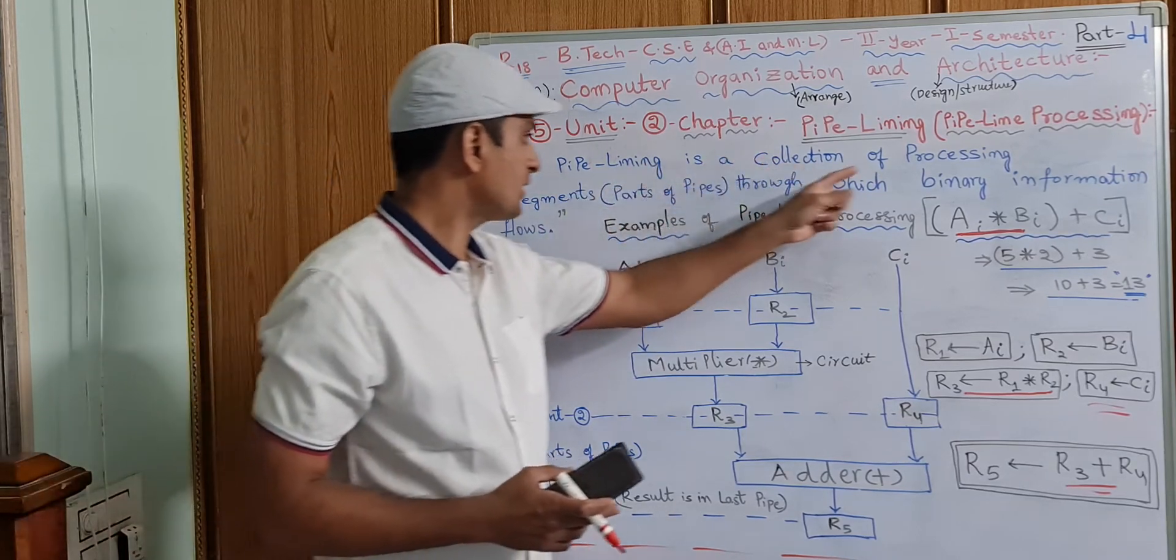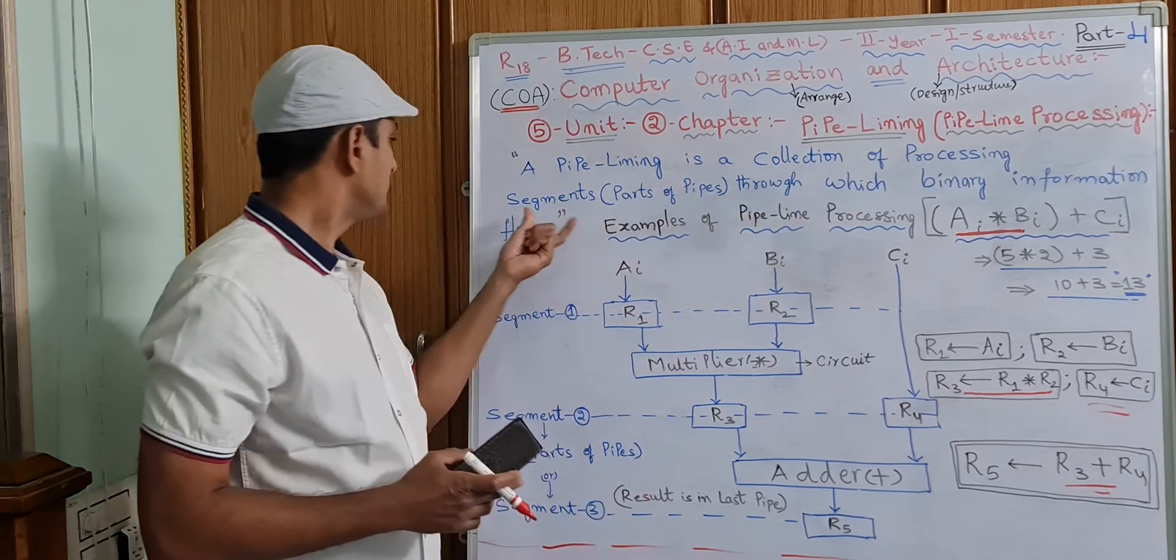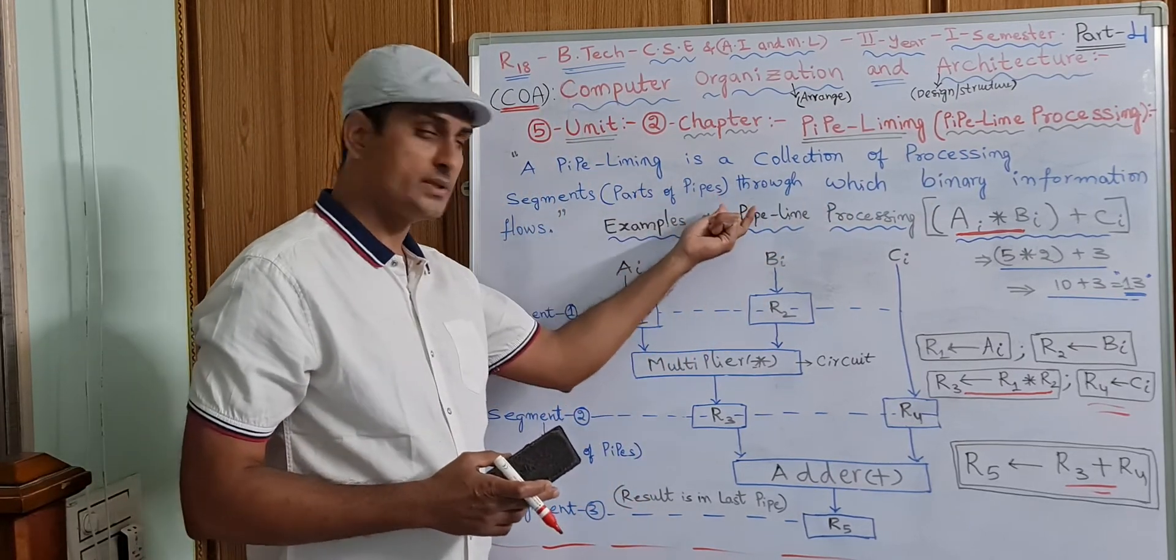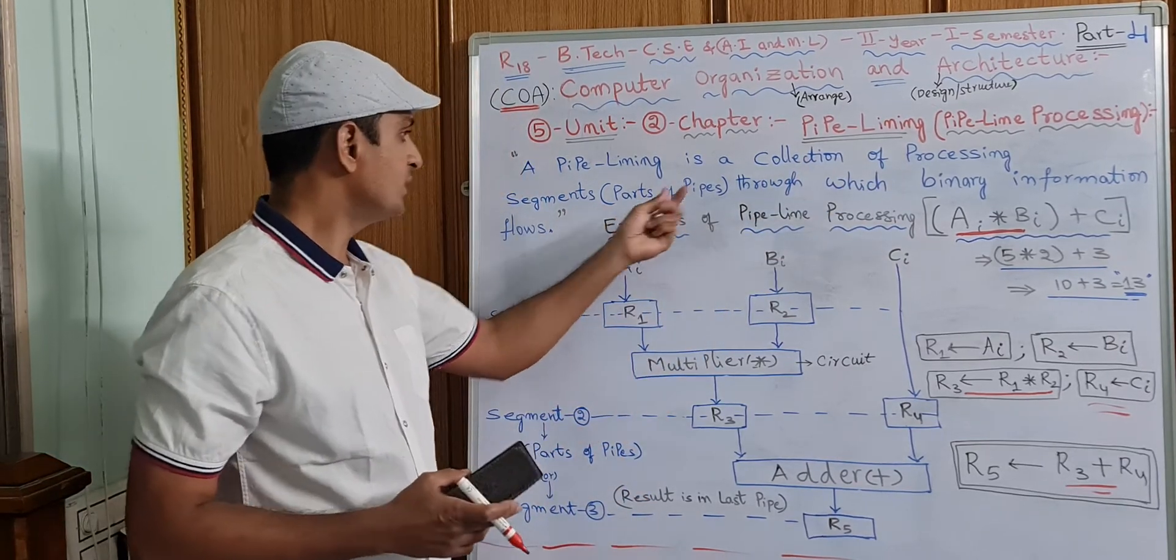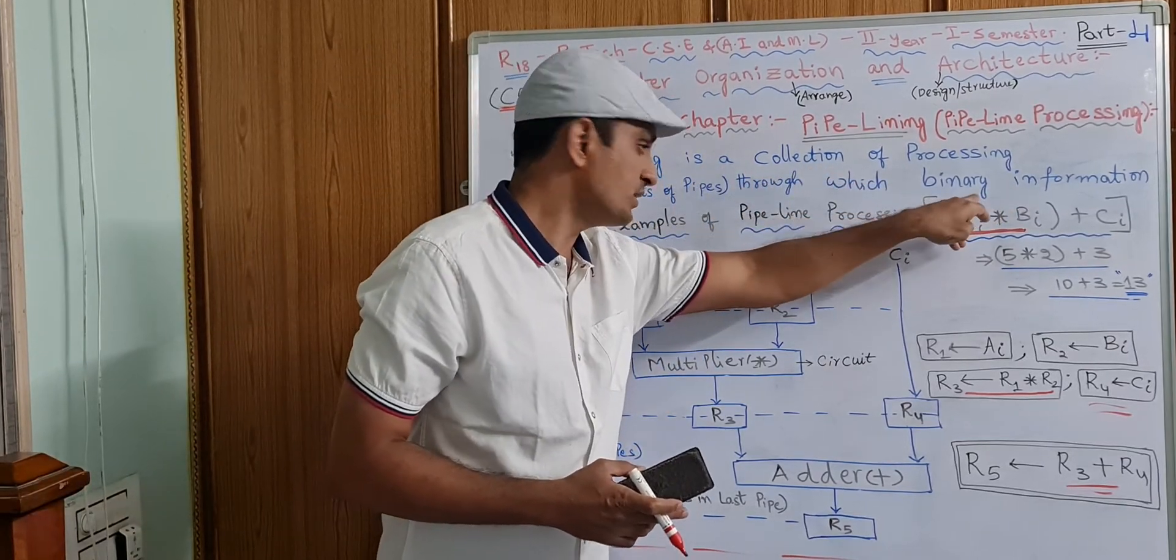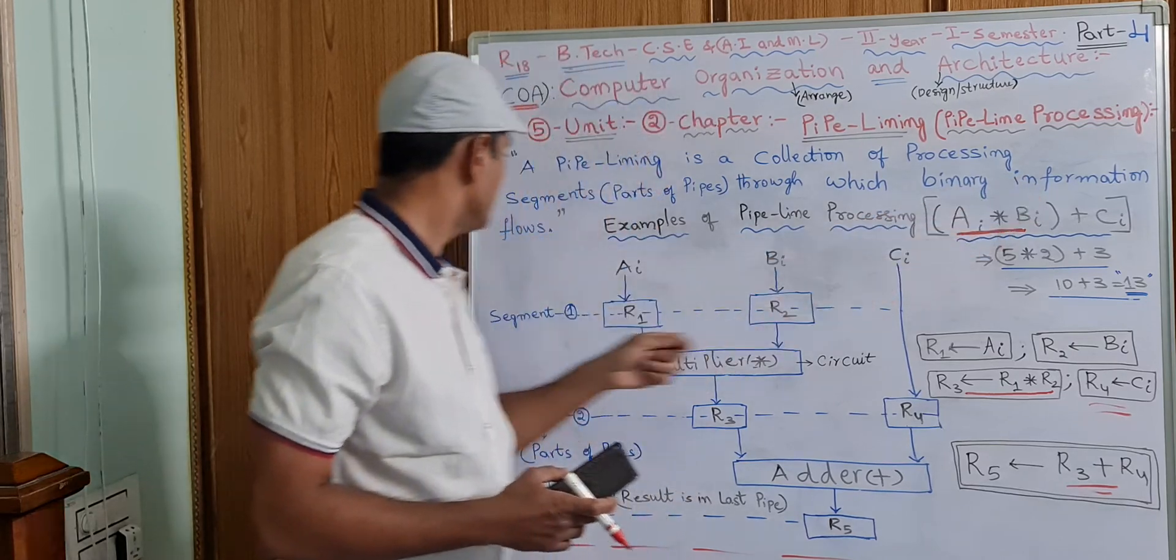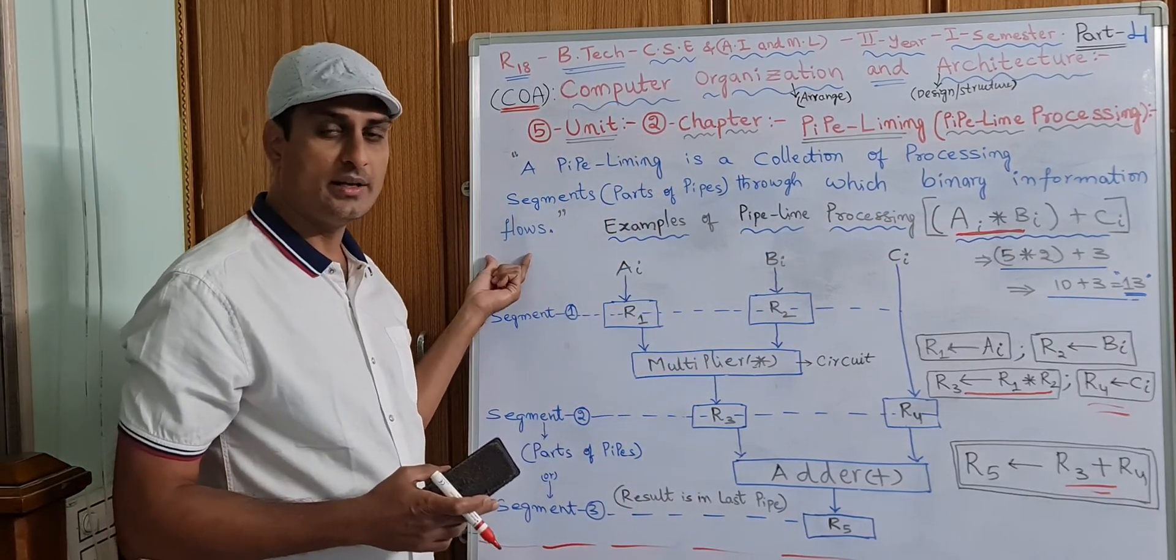A pipelining is a collection of processing segments, parts of pipes, through which binary information, zeros and ones, flows. All the best.